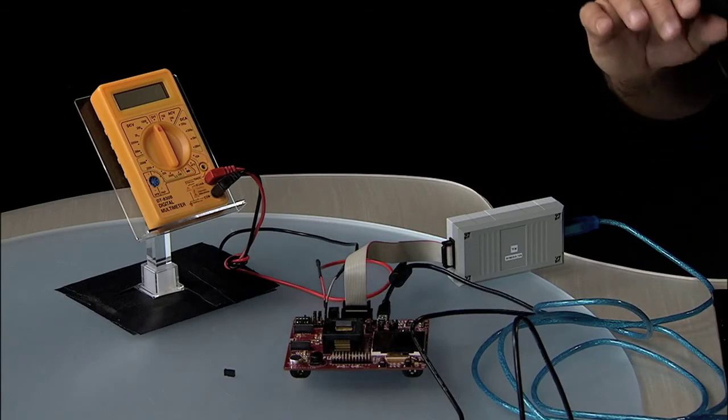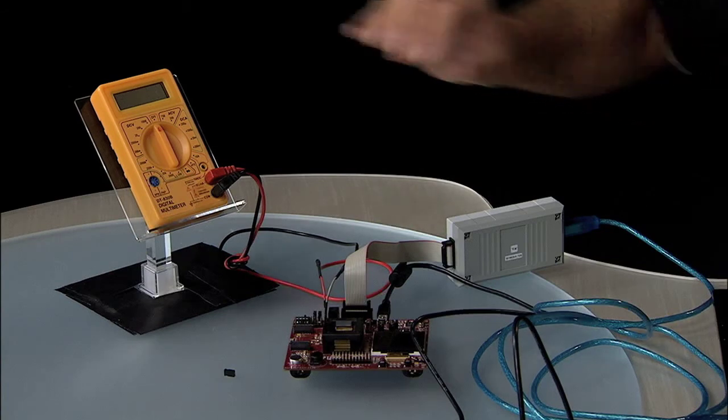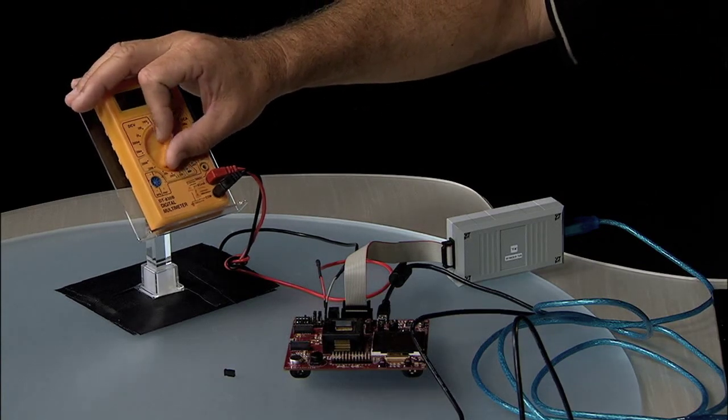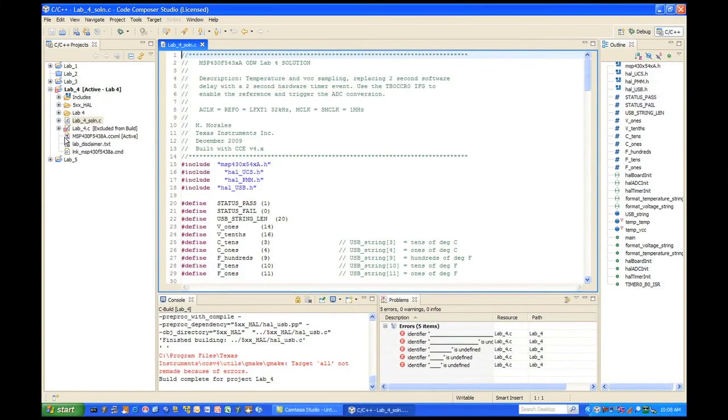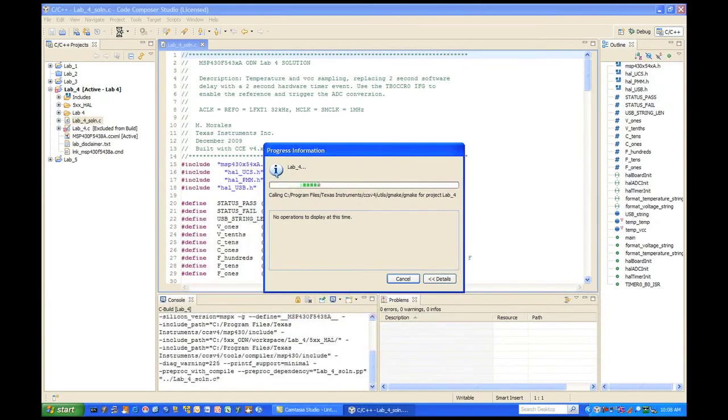So we need to, since the board is being powered through the multimeter, I'll reach over and turn on the multimeter to power the board. And we'll click the debug in Code Composer to download the code to the board.